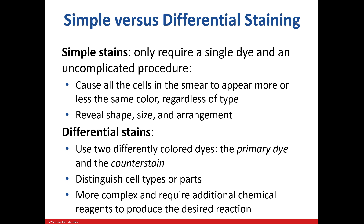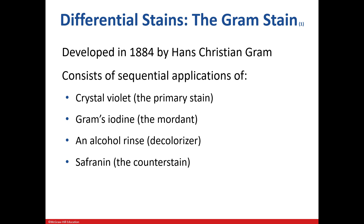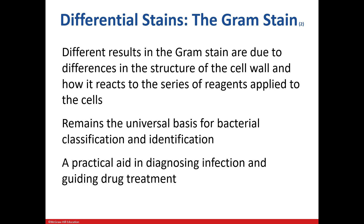A differential stain uses two different dyes, giving us the ability to determine differences in cells or structures. Here is a simple stain of both a bacterium and a yeast — you can see the shape and general size. One of the most common differential stains is the Gram stain, which gives us the ability to distinguish differences in cells based on the cell wall. Two dyes, crystal violet and safranin, are used along with Gram's iodine and alcohol. The Gram stain shows differences in cell walls based on how they react to the reagents. This is the key tool used in the identification process and is also important for diagnostic purposes as well as determining what antibiotic needs to be prescribed.